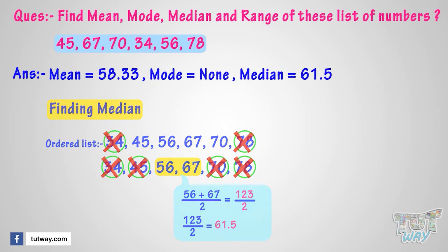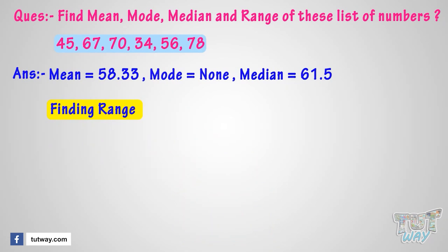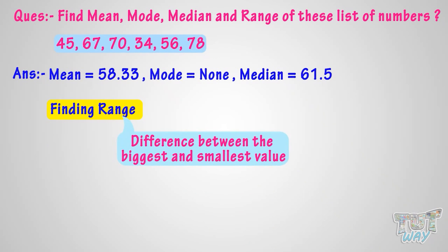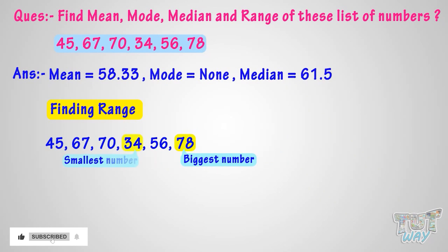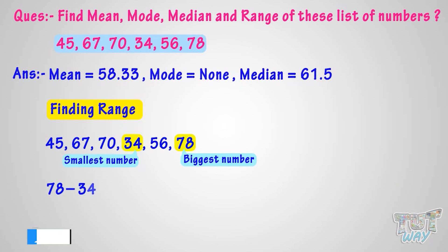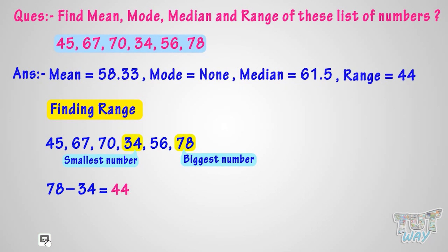Now let's find the range. The range is the difference between the biggest and smallest value. The biggest value is 78 and the smallest is 34. 78 minus 34 equals 44. So the range of the list of values is 44.